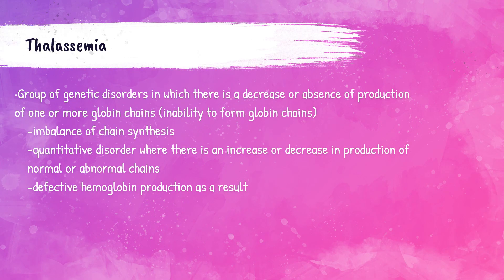Thalassemias are a group of genetic disorders caused by either a decrease or absence of the production of globin chains. Heme and globin are parts of the hemoglobin molecule, so if there are less or no globin chains, there's going to be a defective hemoglobin production.